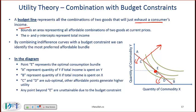The most efficient bundle is where the budget line is tangent to an indifference curve. Bundle E gives the highest level of utility. A potential exam question will involve recognizing the slope of the budget constraint and setting that slope equal to the marginal rate of substitution. Point E is the optimal point — the most preferred affordable bundle.